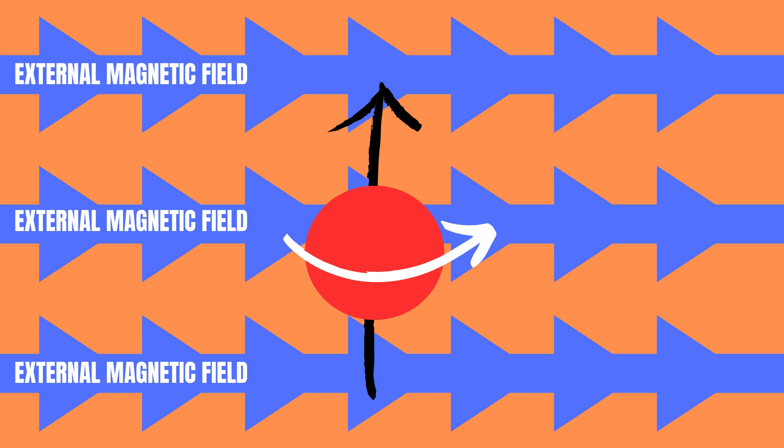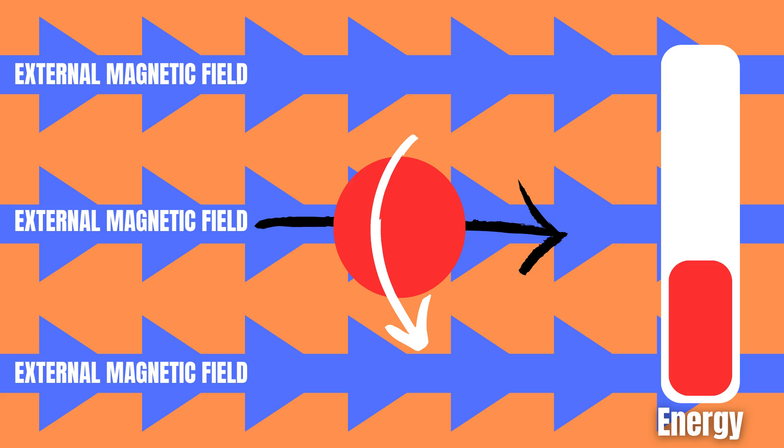NMR works by applying a strong external magnetic field, causing any nuclei with a spin state and subsequent magnetic moment to align with the magnetic field.